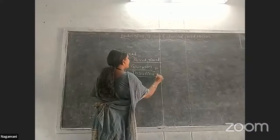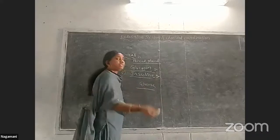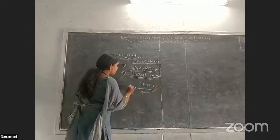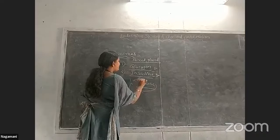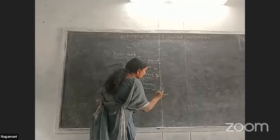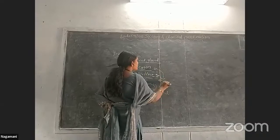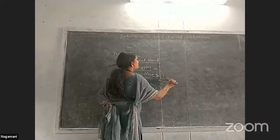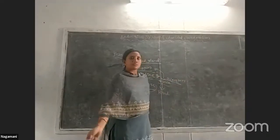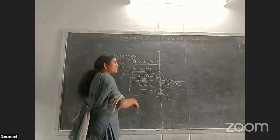Both glucagon and insulin act on glucose molecules. When glucose molecules are high in the blood, insulin stores the glucose into the liver cells. When the glucose level is low in the blood, glucagon releases glucose from glycogen back into the blood.